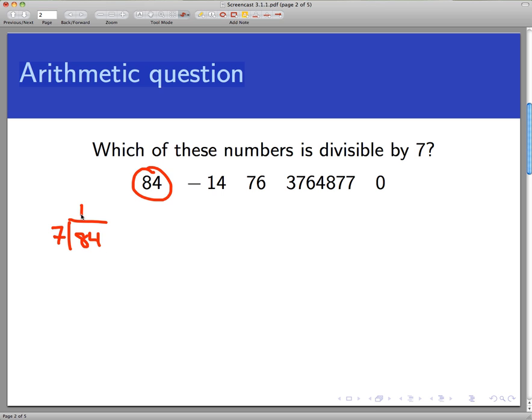So 7 goes into 8 once, put down the 7, subtract, you get 14. Divide 7 into 14, it goes twice, that's a 2, I have a 14 here, and there's no remainder. And that's what we typically mean by 7 divides 84—is that it divides evenly, there's no remainder.